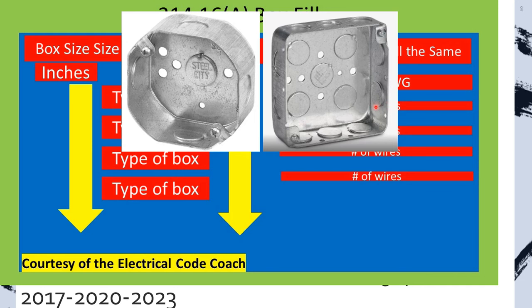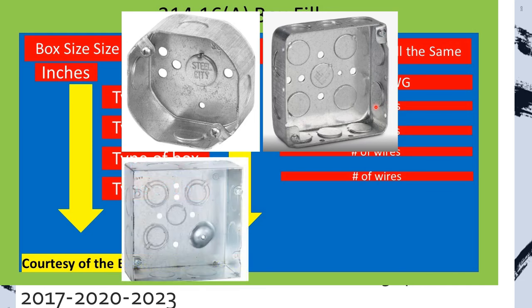The next three lines you'll notice say square as well, but its dimensions are a little bit different. It says four and eleven-sixteenths by four and eleven-sixteenths by whatever the depth is.